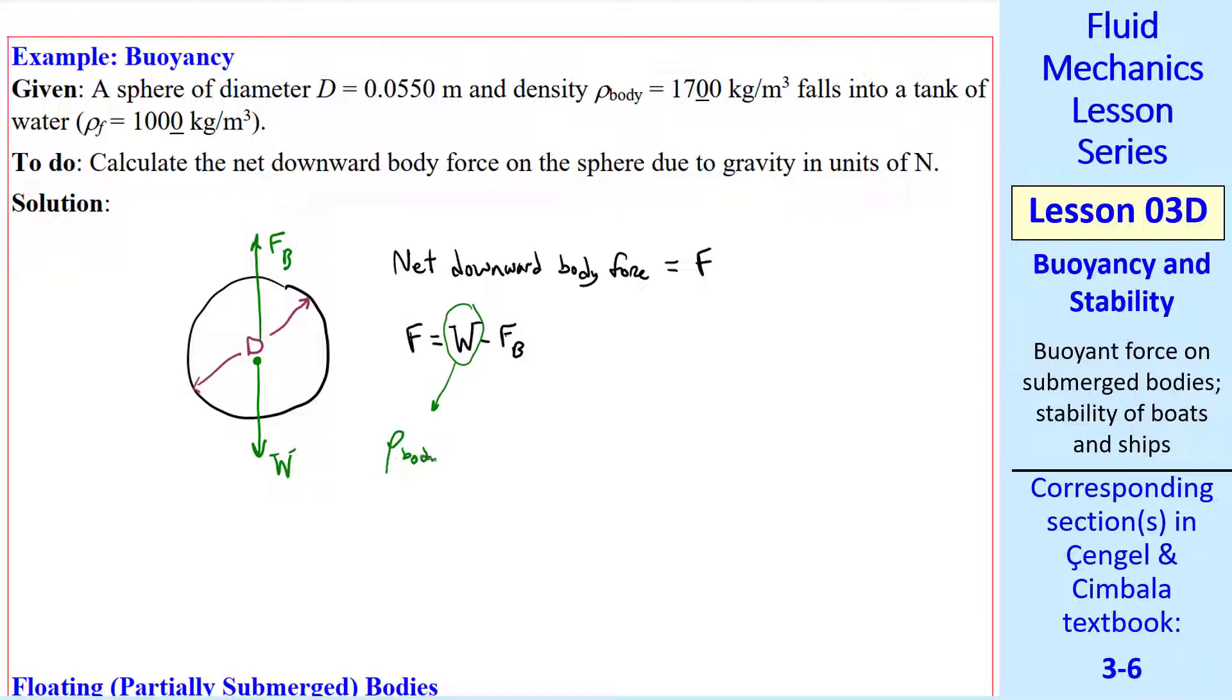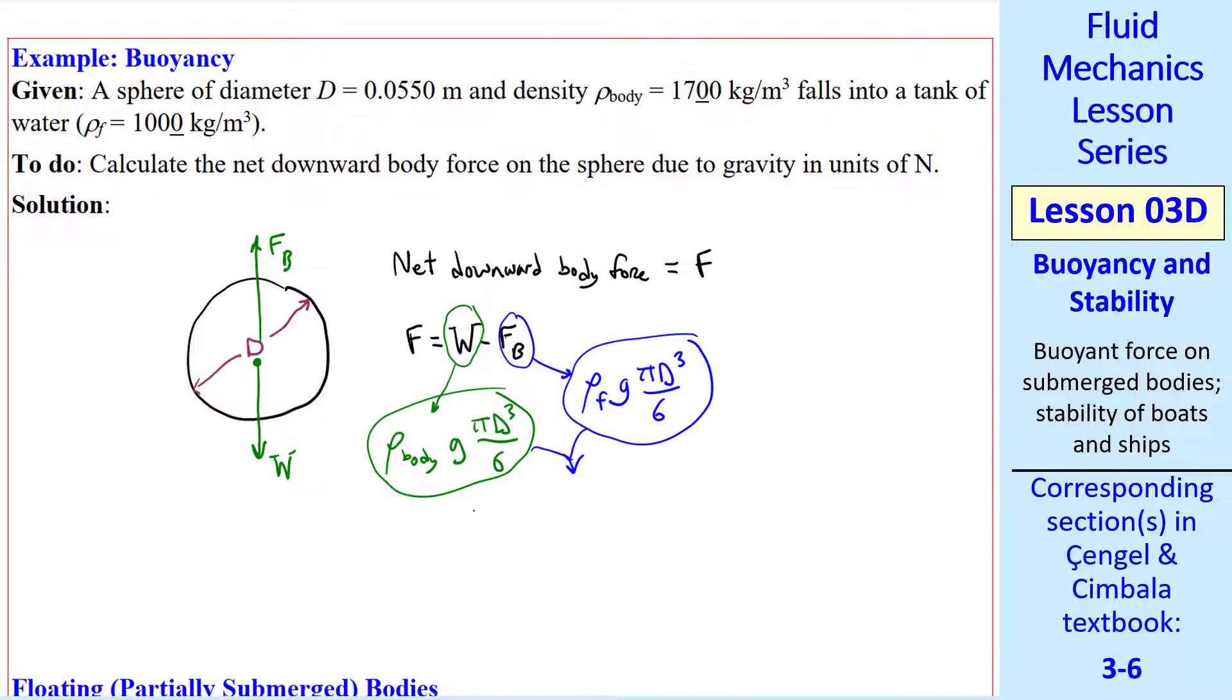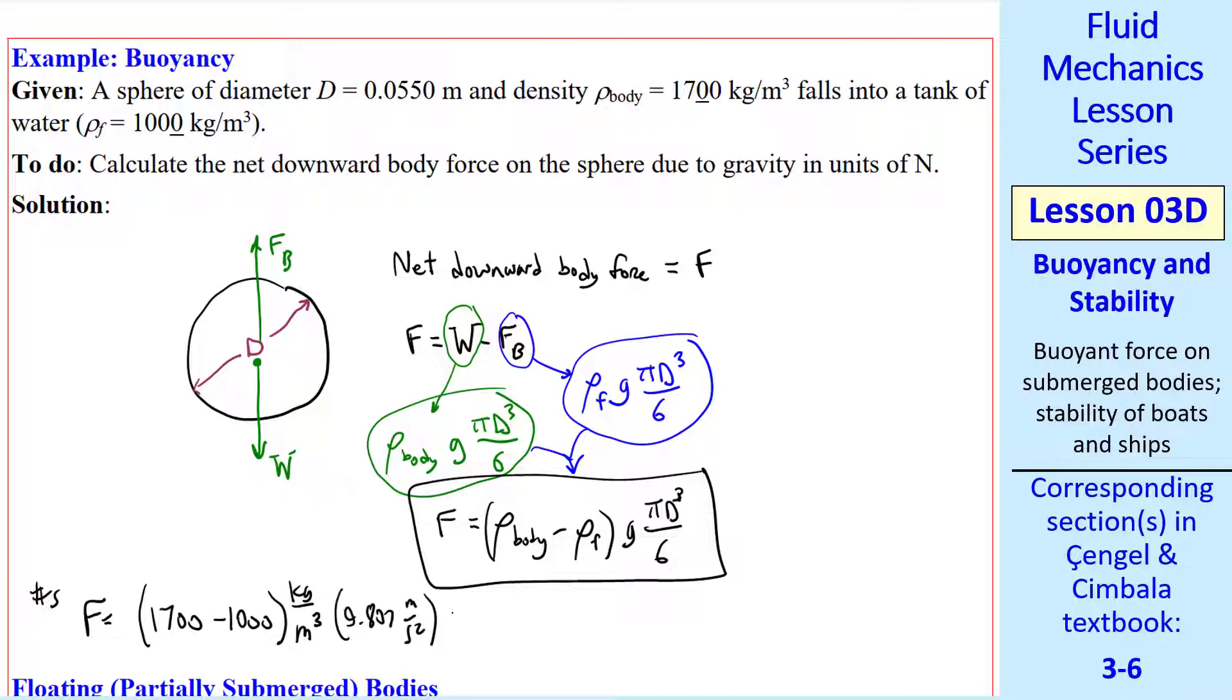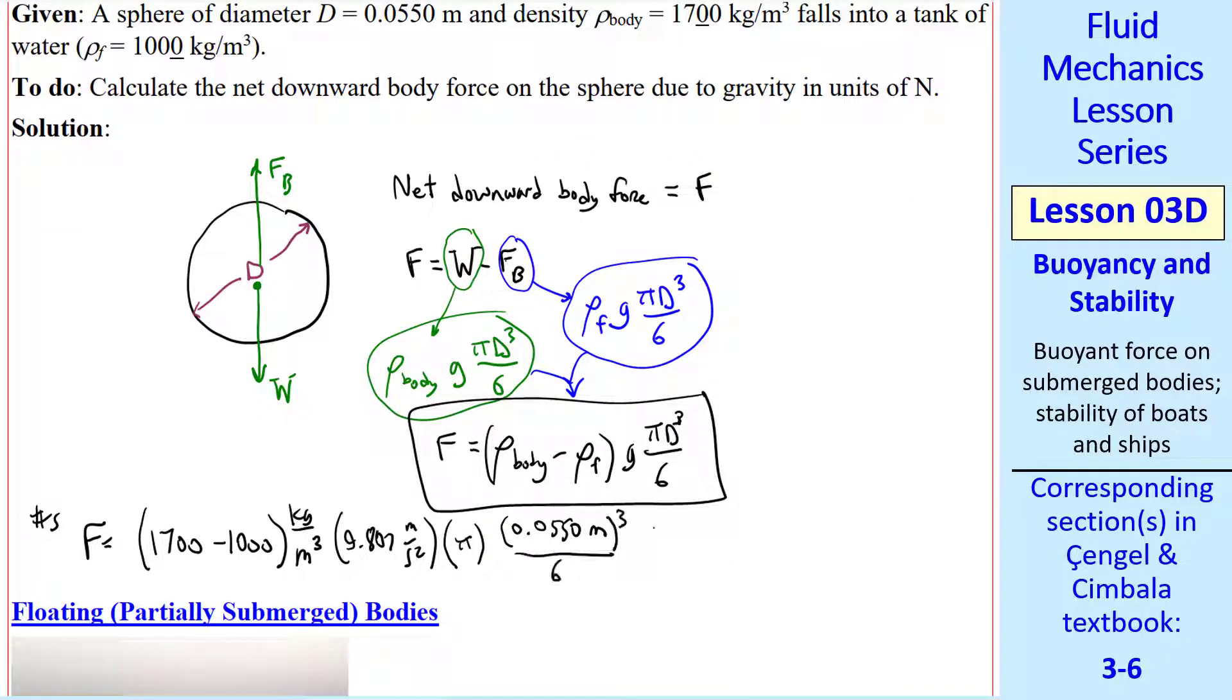W is ρ of the body, g, times the volume of the body, which is πd³/6. The buoyant force is ρ_F g times the volume, by Archimedes' principle. We can combine these terms to get our answer in variable form. We plug in our numbers. The difference between the body and the liquid density, g, diameter cubed, over 6. Our usual unity conversion factor. Our final answer is 0.598 newtons acting downward.